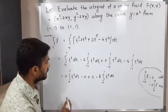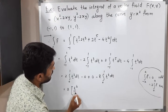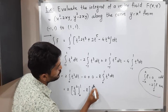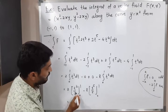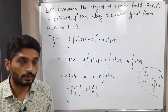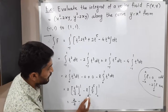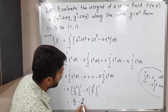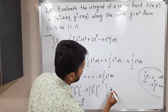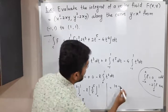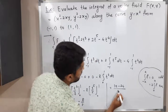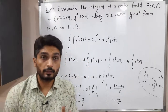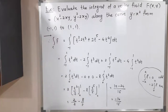Now it is easy to calculate. We have 2 · [t³/3] from 0 to 1, which gives 2/3, minus 8 · [t⁵/5] from 0 to 1, which gives 8/5. So the result is 2/3 − 8/5. Cross-multiplying: (10 − 24)/15 = −14/15. So the answer is −14/15. In this way we calculated the value of the line integral of a vector field.